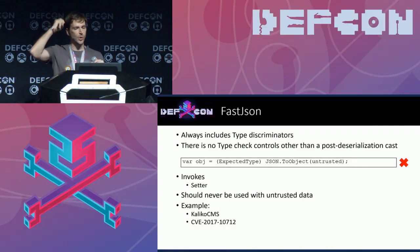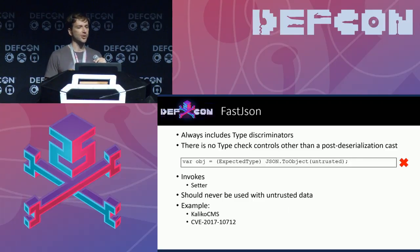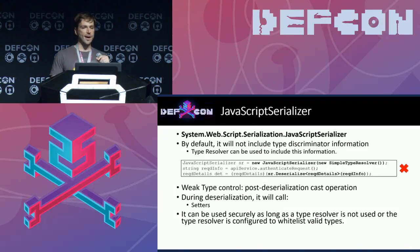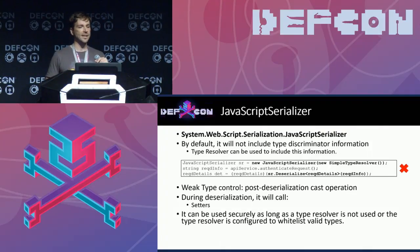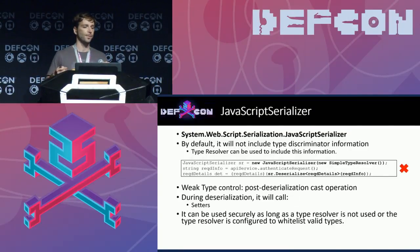FastJSON is one of the red ones — should never be used with untrusted data. It includes type information by default, offers no type protection, and invokes setters, so we can use the ObjectDataProvider gadget to get arbitrary code execution, like we did in Calico CMS, a .NET content management system. JavaScriptSerializer is a native .NET library. By default it doesn't include type information, but developers can enable it by passing a SimpleTypeResolver to the constructor. It performs only a post-deserialization cast, so it is vulnerable when configured with a type resolver.